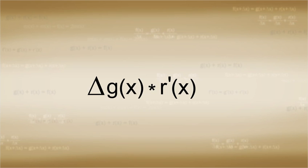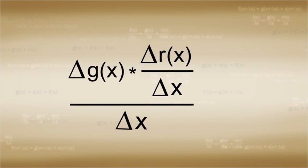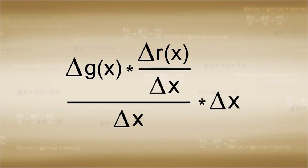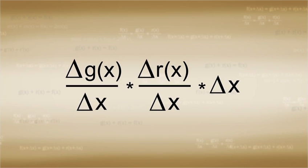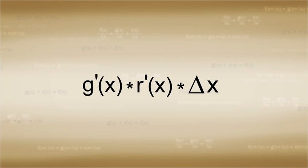Or to change things around a bit, we can divide by Δx and also multiply by it at the same time. Then we get Δg(x) over Δx times Δr(x) over Δx multiplied by Δx. And that approximates to g'(x) times r'(x) times Δx.